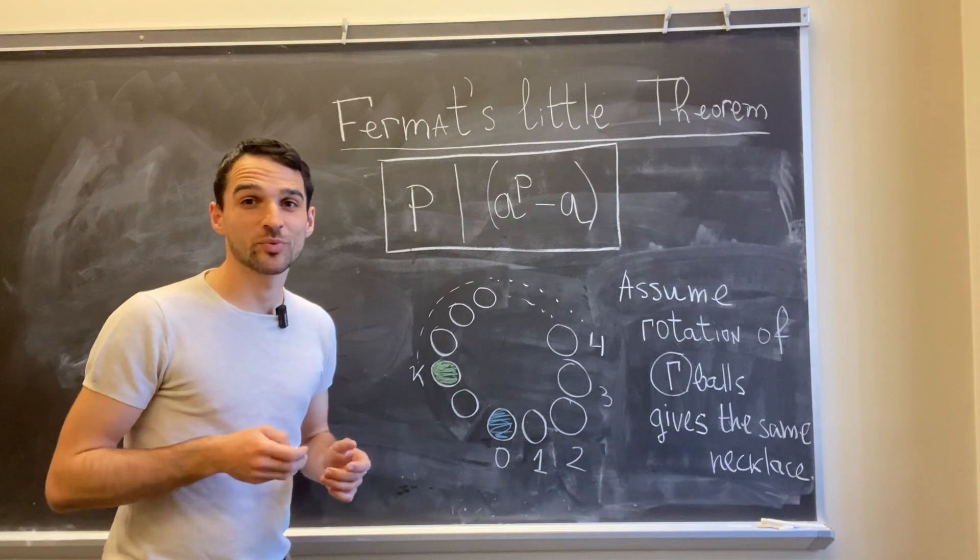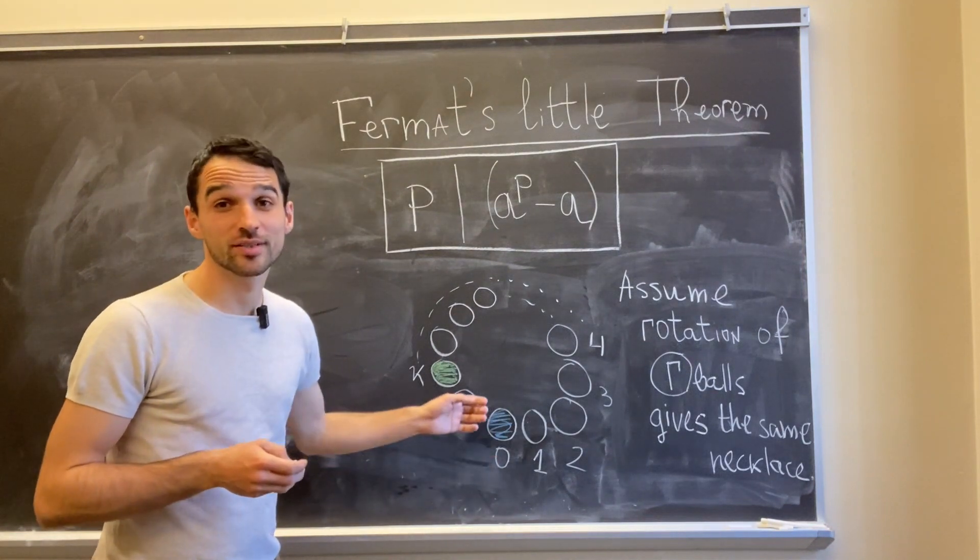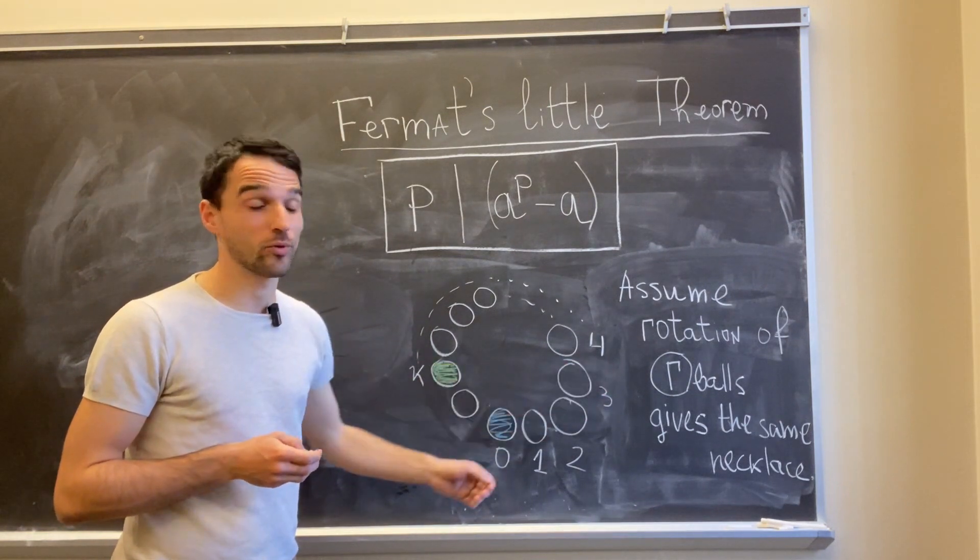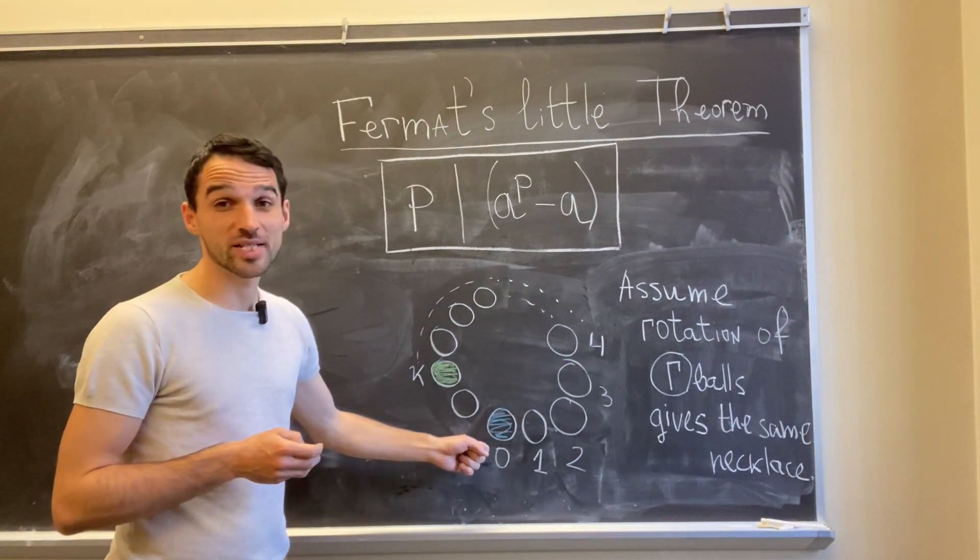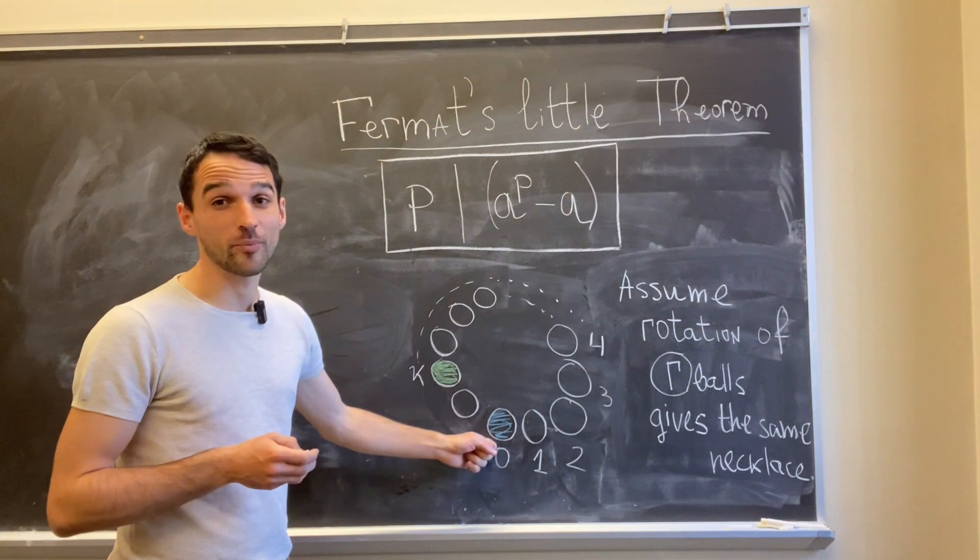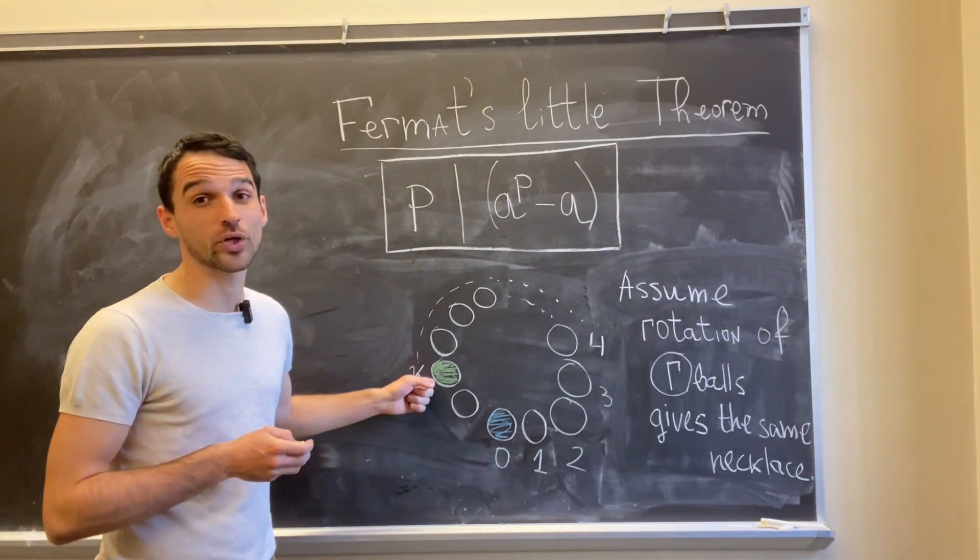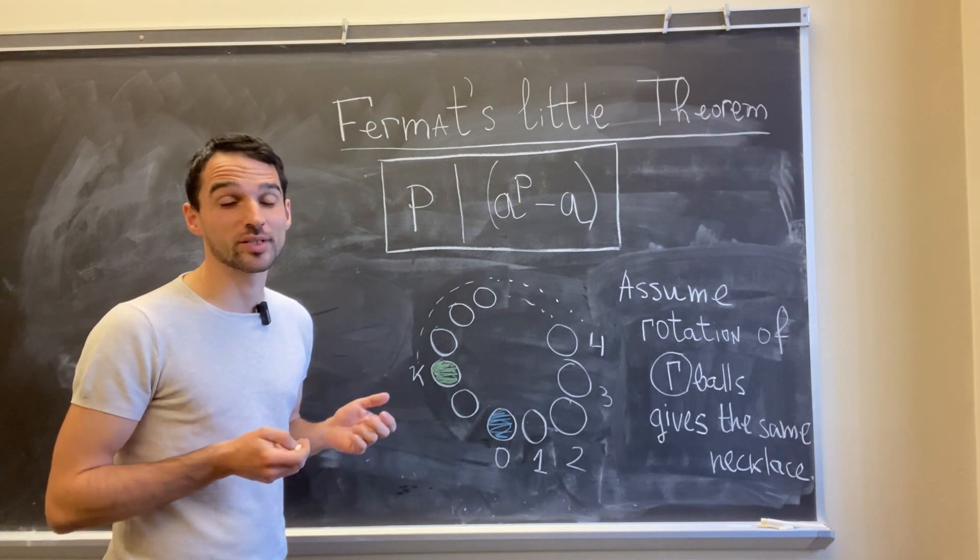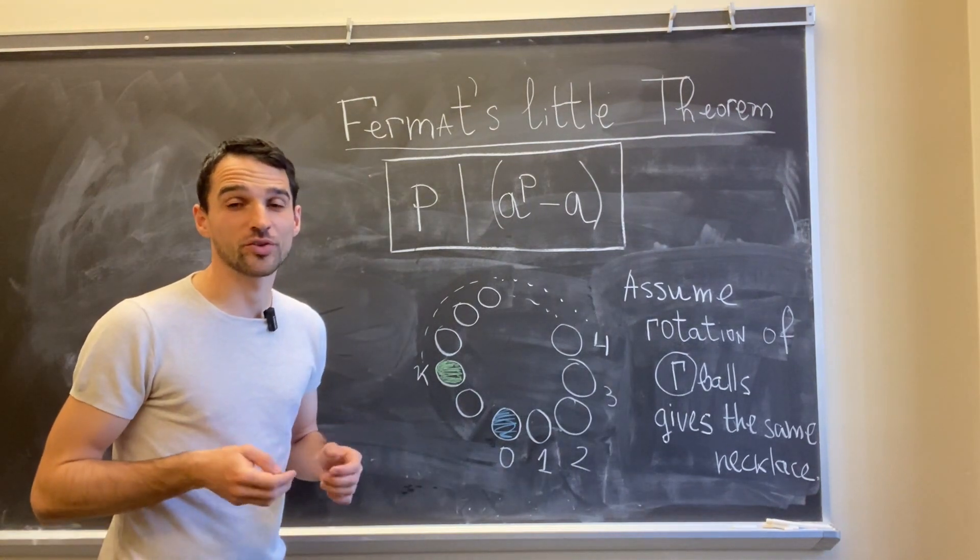So now I will get the contradiction by showing that after a certain number of rotations to these r balls counterclockwise, I can basically move this ball with number 0 to that ball with number k. And then they must be of the same color, but they are not. So that would be a contradiction.